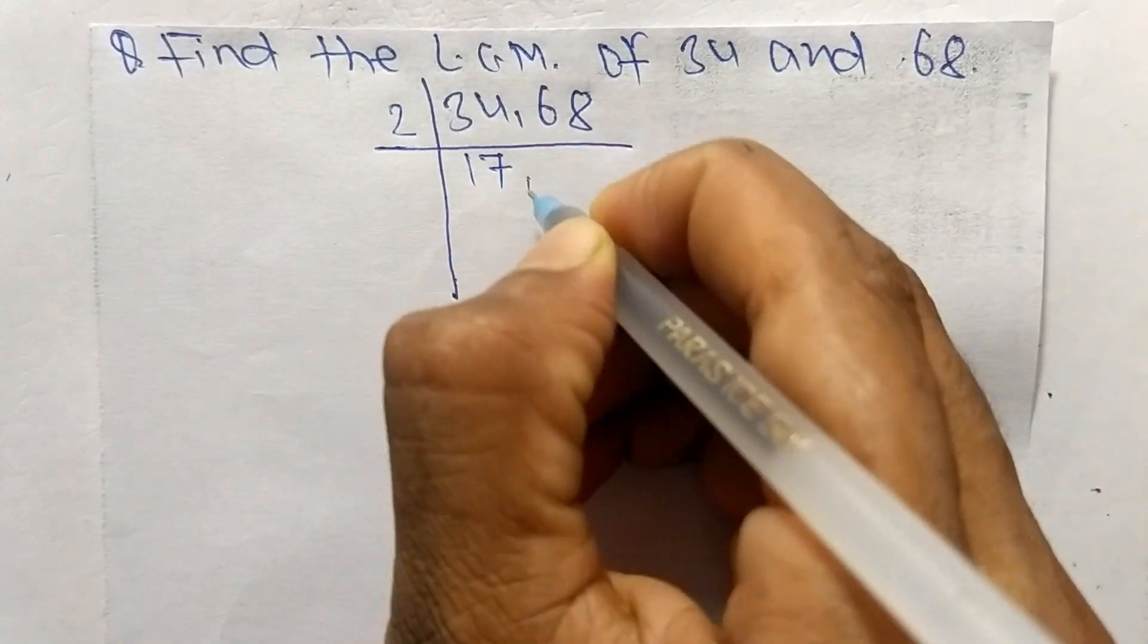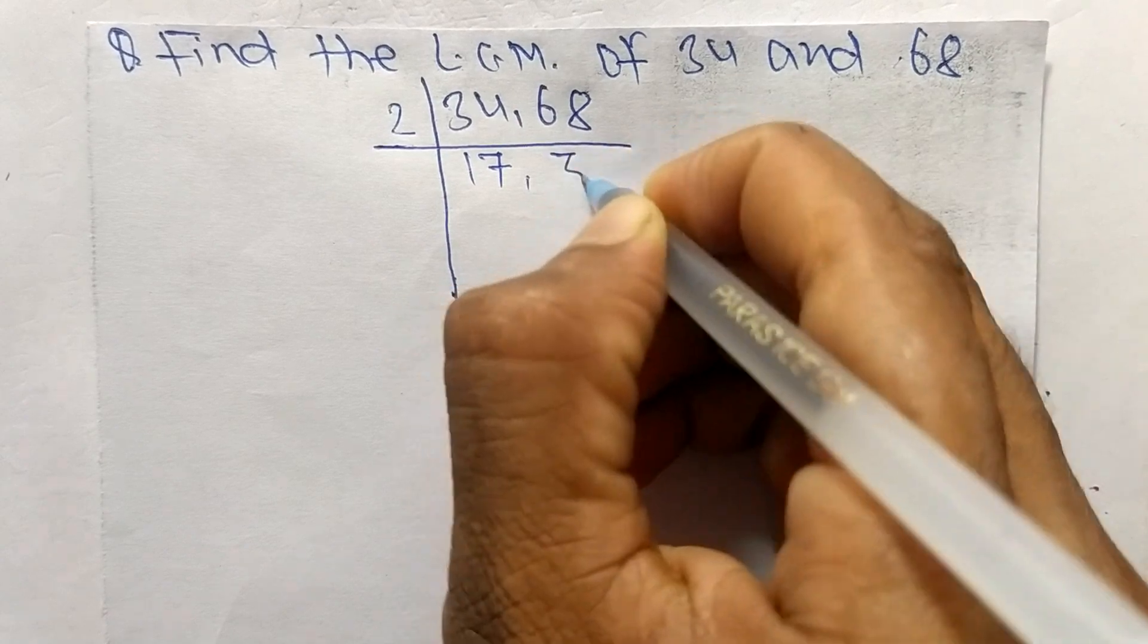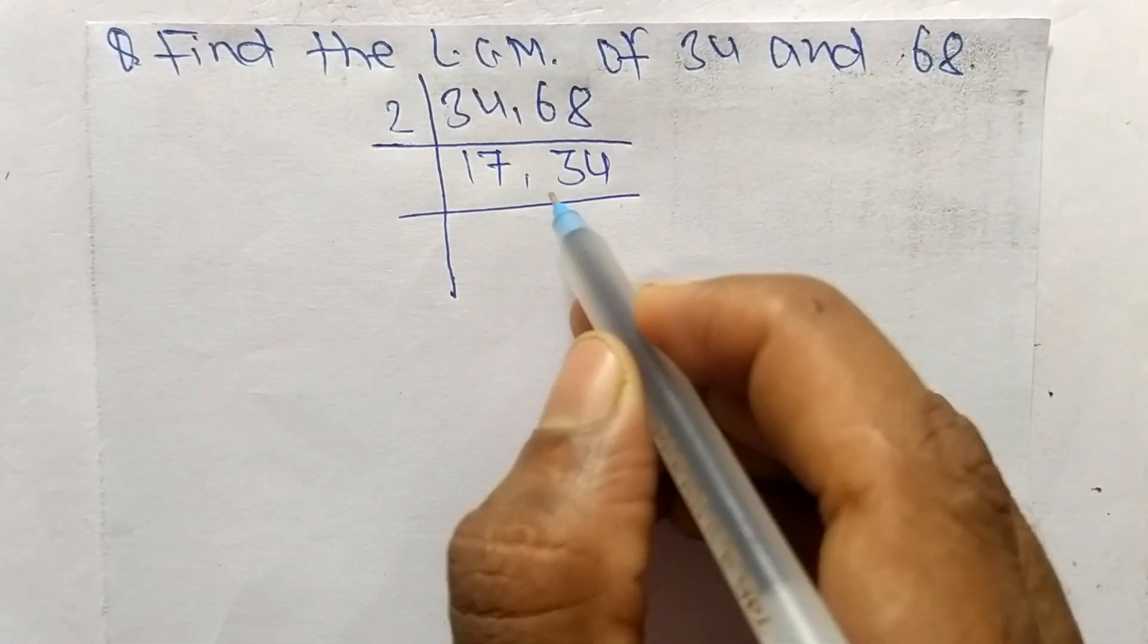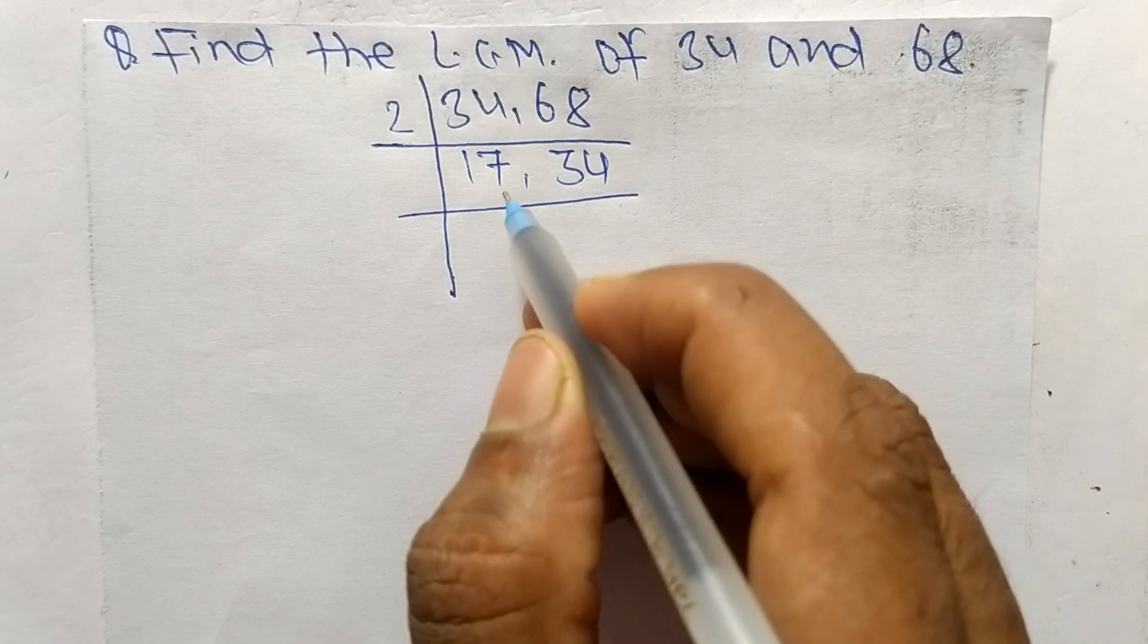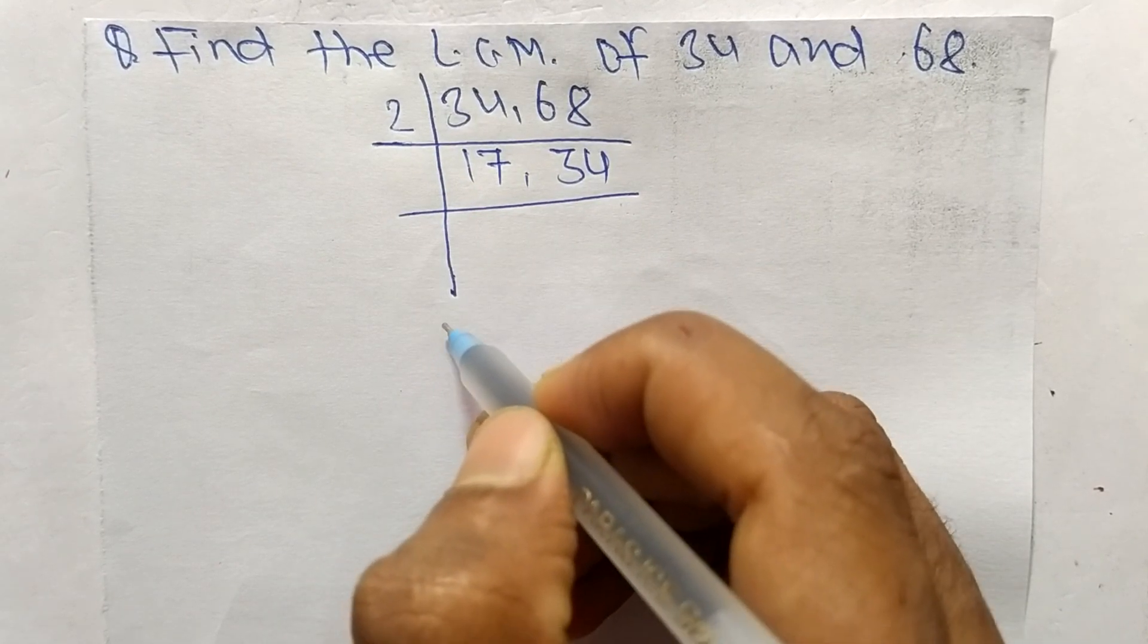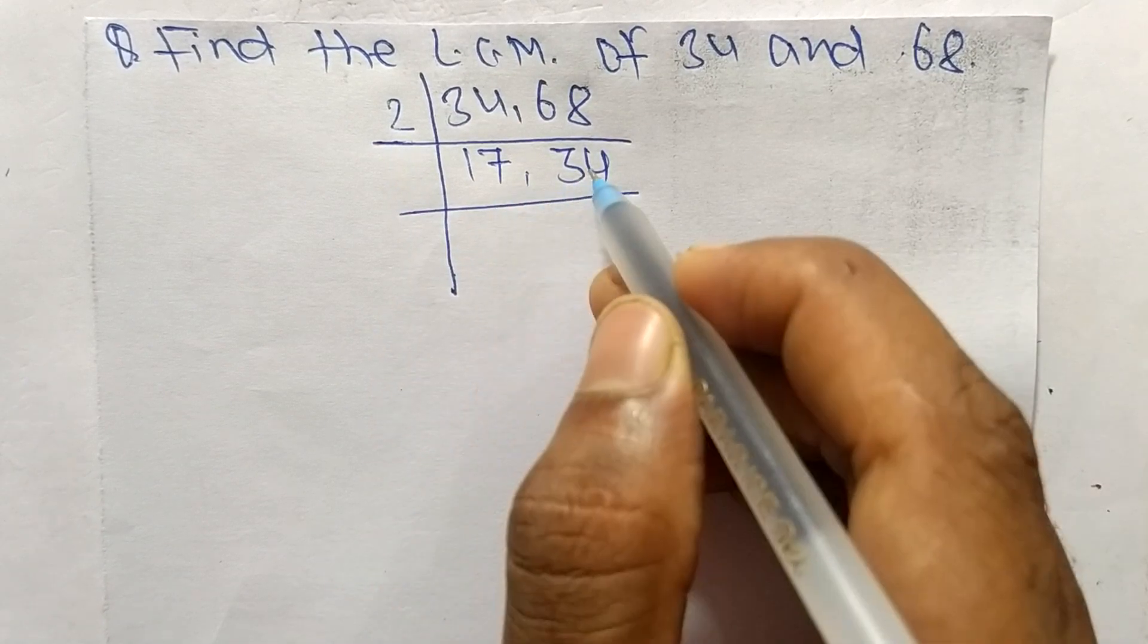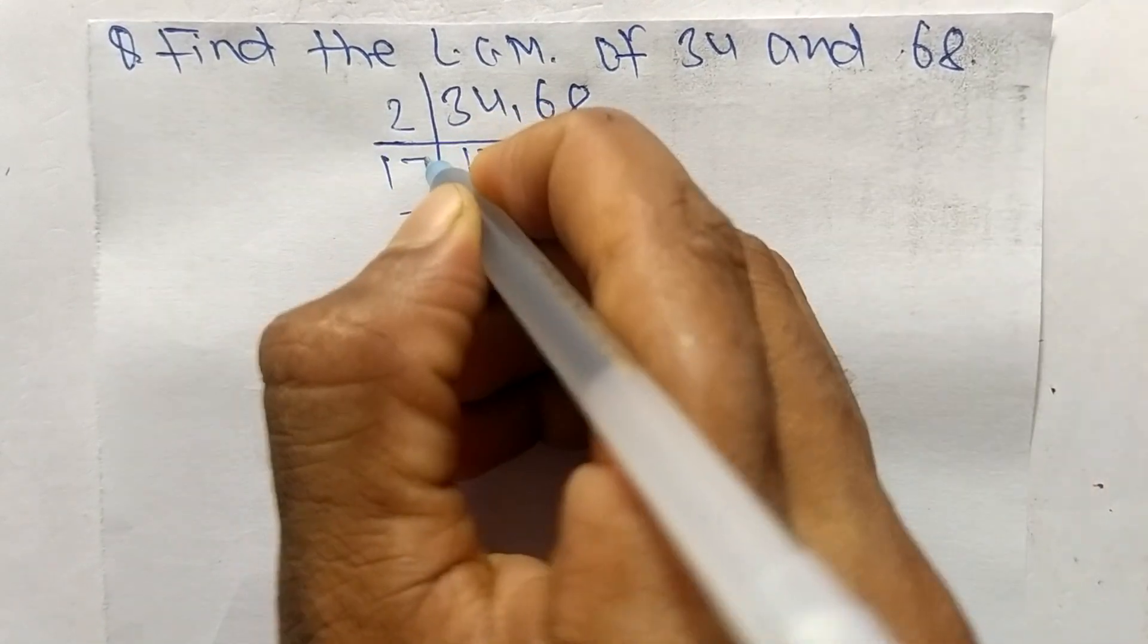2 times 17 means 34, 2 times 34 means 68. Now these both numbers are not exactly divisible by 2, so we choose the number greater than 2 that can exactly divide 17 and 34. The number is 17.